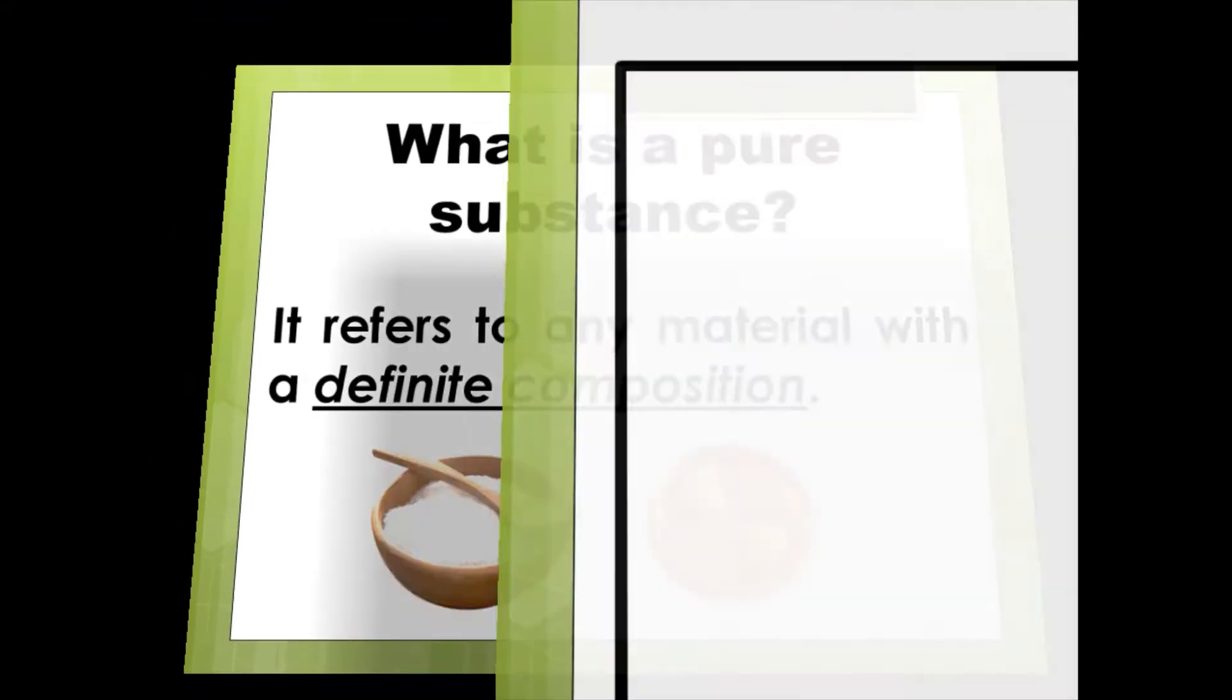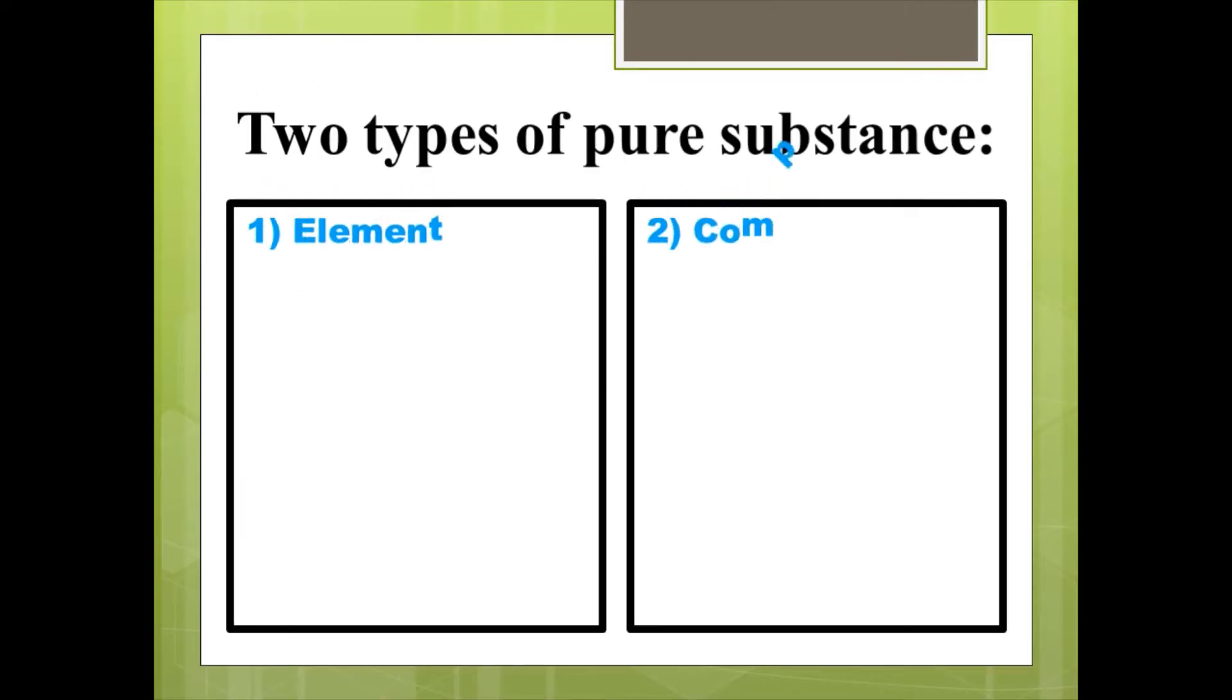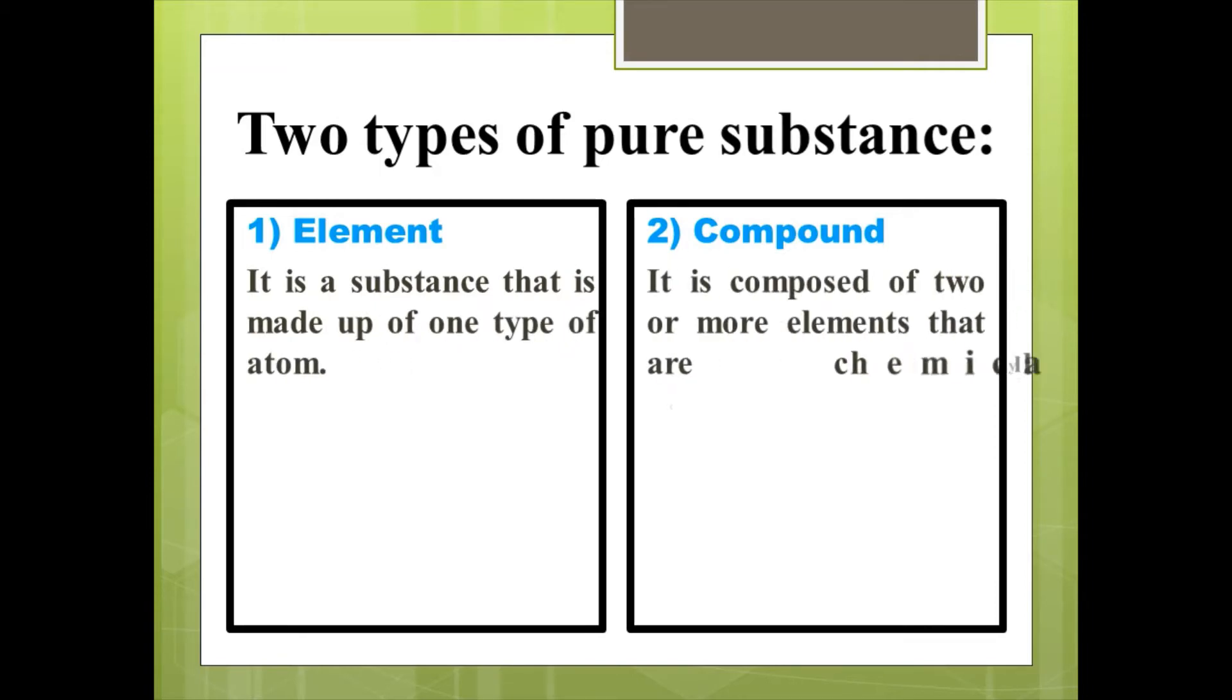We have two types of pure substance: first, element; second, compound. What is an element? It is a substance that is made up of one type of atom. A compound is composed of two or more elements that are chemically combined.